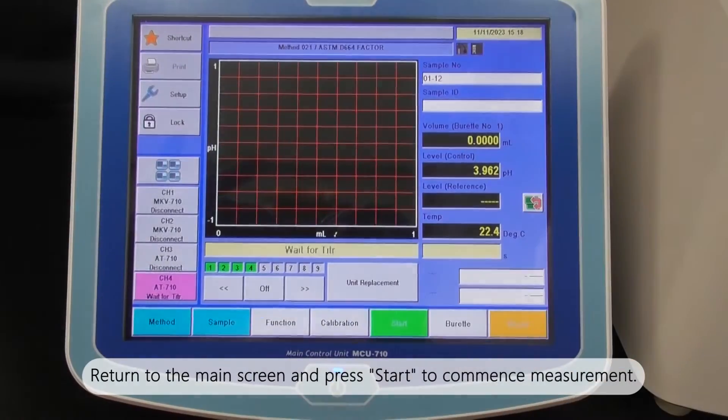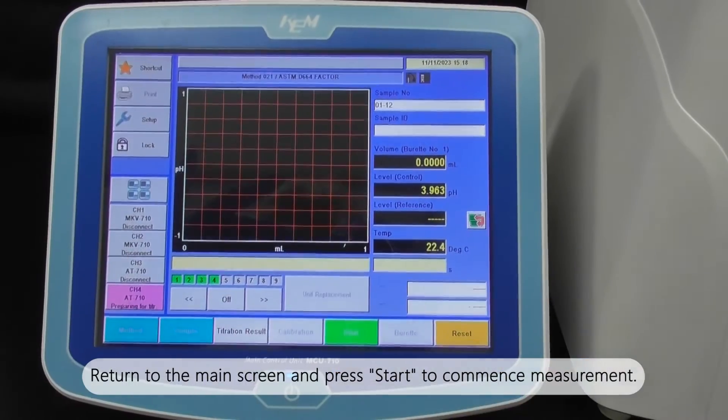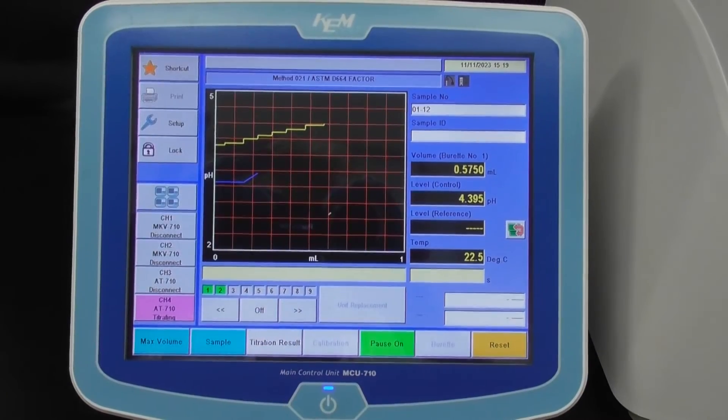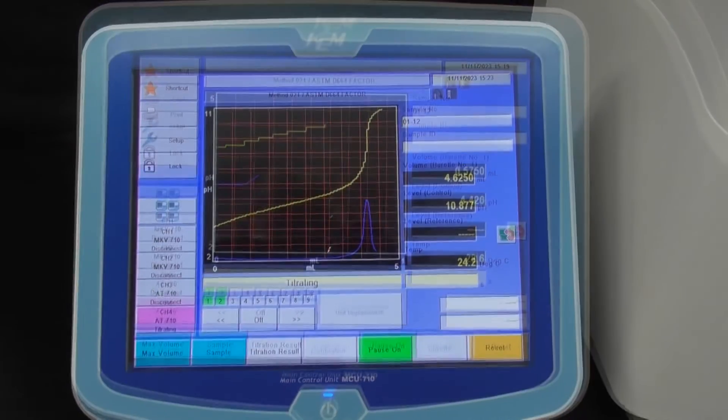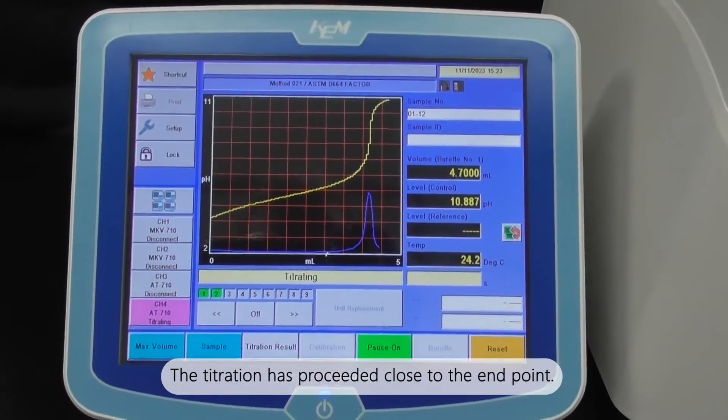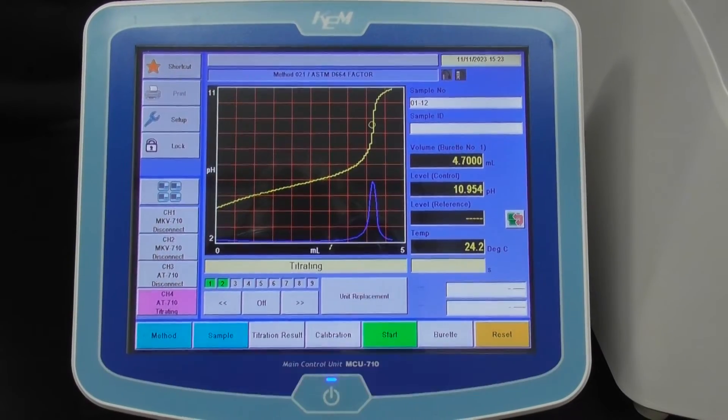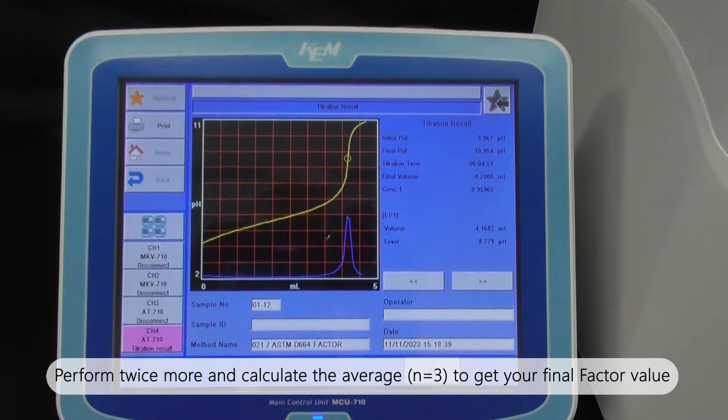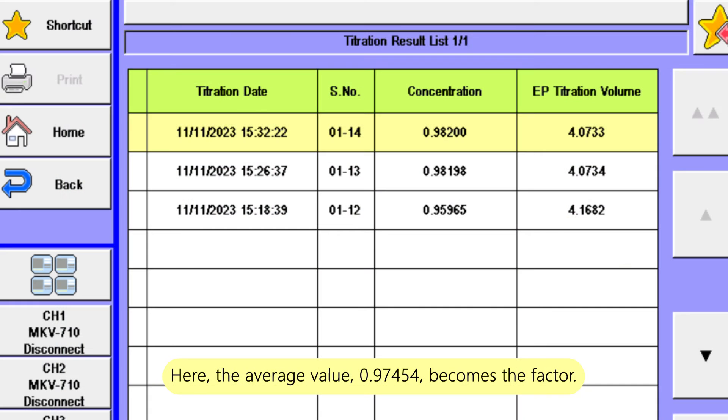Return to the main screen and press start to commence measurement. The titration has proceeded close to the endpoint. The result is displayed when reached. Perform twice more and calculate the average to get your final factor value. Here, the average value 0.97454 becomes the factor.